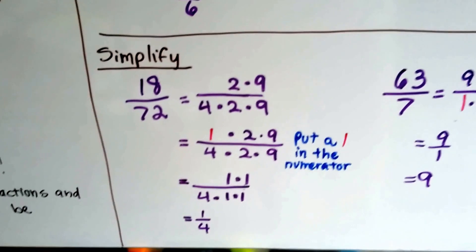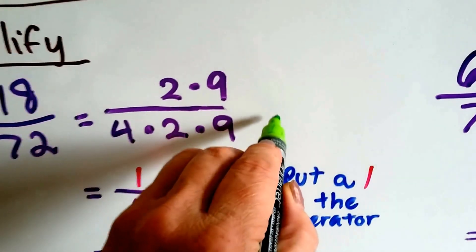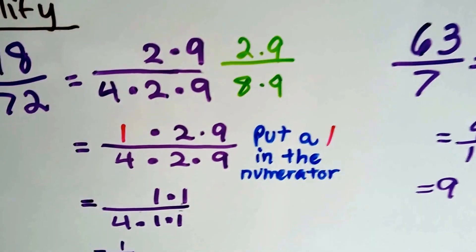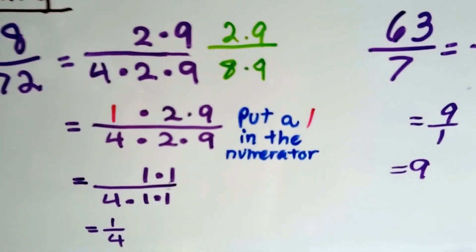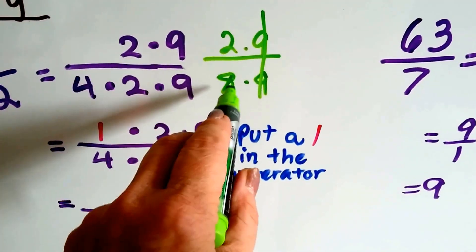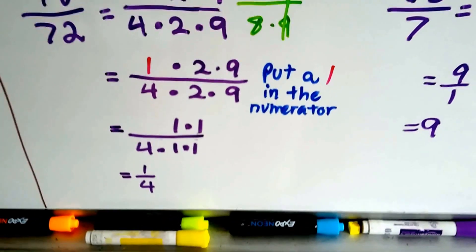Because we didn't have to do 4 times 2 times 9, did we? We could have done 8 times 9 and 2 times 9. And we would have had to reduce it some more, but this would have canceled out as a 1, and we would have had 2 eighths, which is 1 fourth.